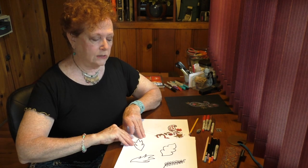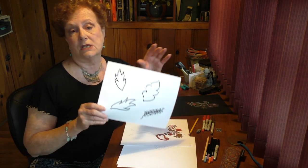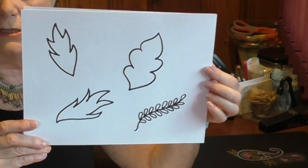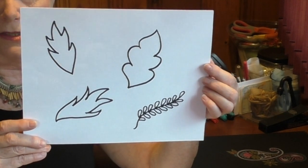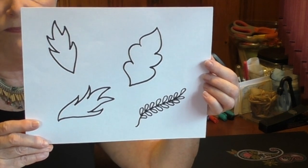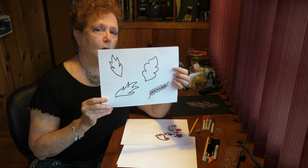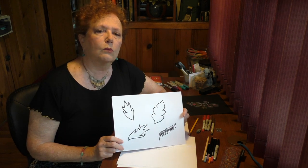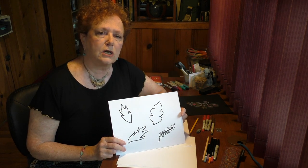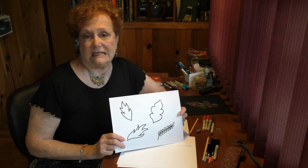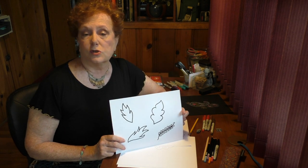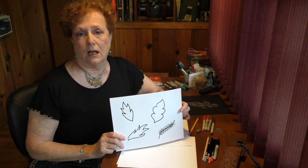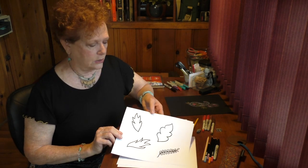Then we need some leaves and vines. Those get incorporated into Paisley designs as well. The final element, which I'll show you when we work on the project, are the seeds. Those are just basically little circles that you can add to your Paisley project.